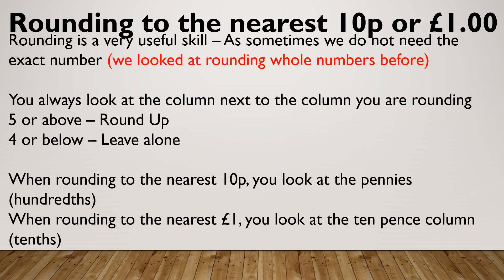When we're rounding to the nearest 10 pence or pound, same as when we rounded to the nearest 10 and nearest 100, we're always looking at the column next to the column we're rounding. Five or above, round up. Four or below, leave alone. So when we're rounding to the nearest 10 pence, I'm looking at the pennies. When I'm rounding to the nearest pound, I'm looking at the 10 pence.